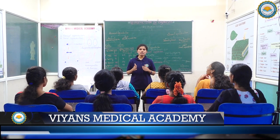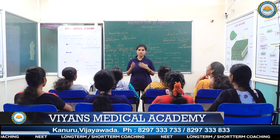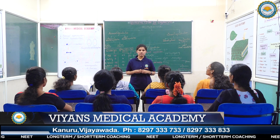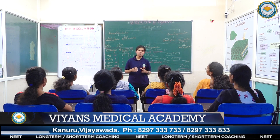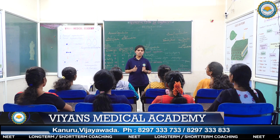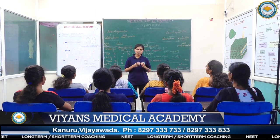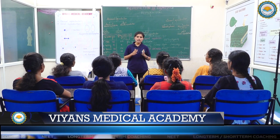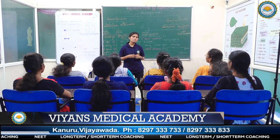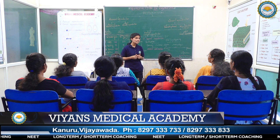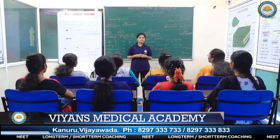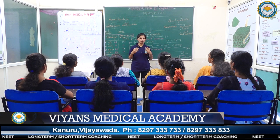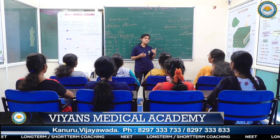Every organism has a certain time period to live. The period from birth to death is called lifespan. When we see a short organism in our environment, it doesn't mean it has short days to live. Similarly, when we see long organisms, it doesn't mean they have longer days to live. For example, a parrot's lifespan is 140 years, while a crow's lifespan is only 15 years.